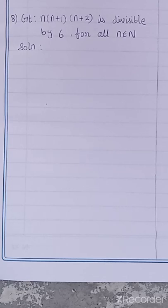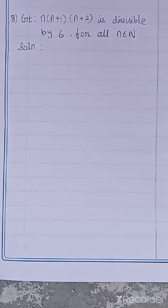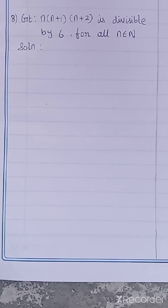First step: whatever statement is given, you have to take it as P of N. Second step: take N equal to 1 and prove it is true. Next step: take N equal to K and assume that P of K is true. And the last step: take P of K plus 1 and using P of K, prove P of K plus 1.